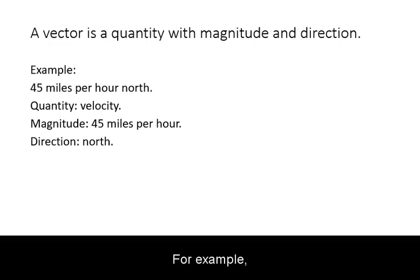For example, 45 miles per hour north refers to a measurement of the quantity of velocity. The magnitude is 45 miles per hour and the direction is north.